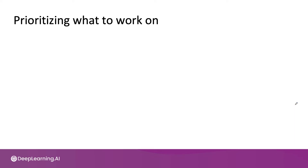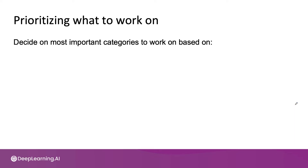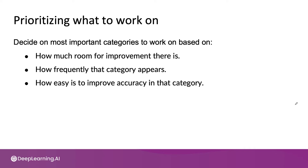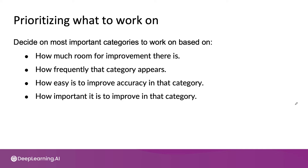To summarize, when prioritizing what to work on, you might decide on the most important categories based on: how much room for improvement there is, such as compared to human level performance or some baseline; how frequently that category appears in your data; and how easy it is to improve accuracy in that category. For example, if you have ideas like data augmentation for improving speech with car noise, that might cause you to prioritize that category more highly than one where you have fewer ideas.